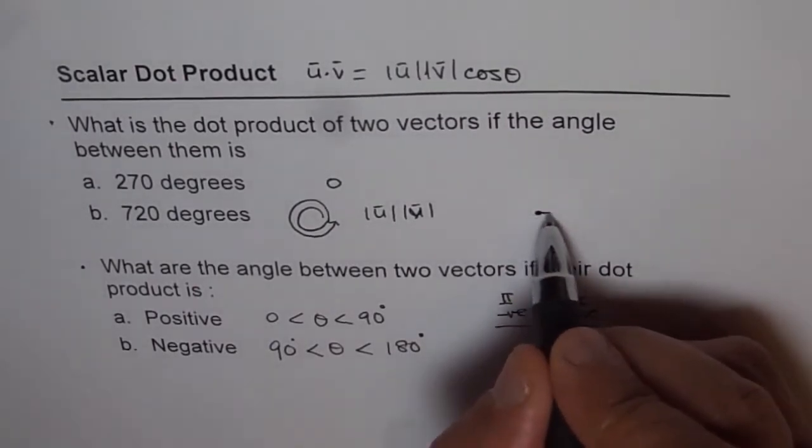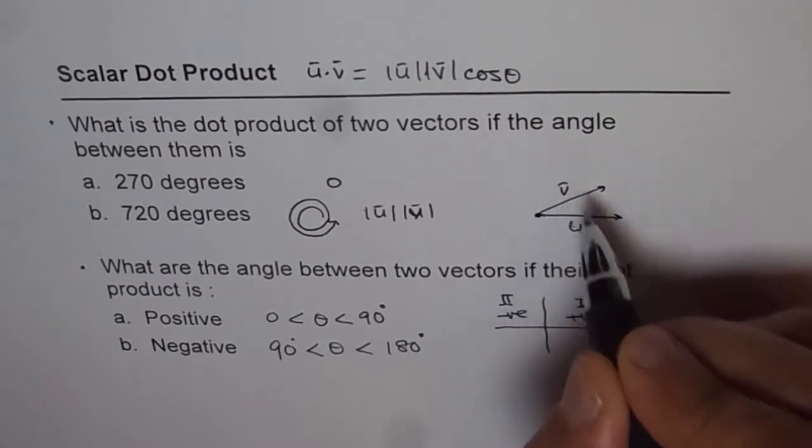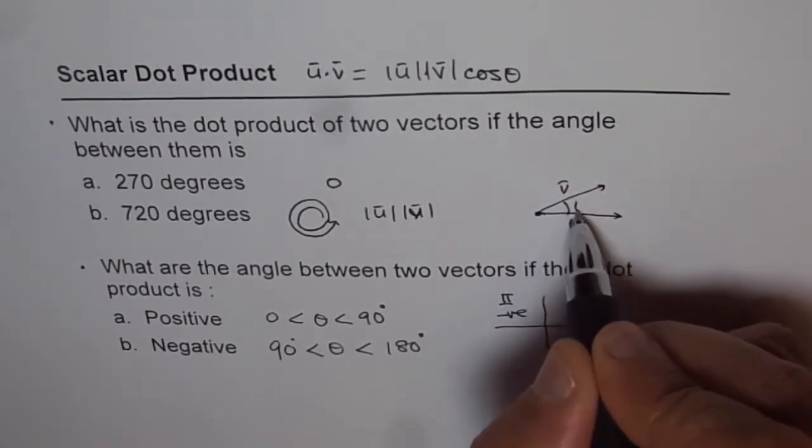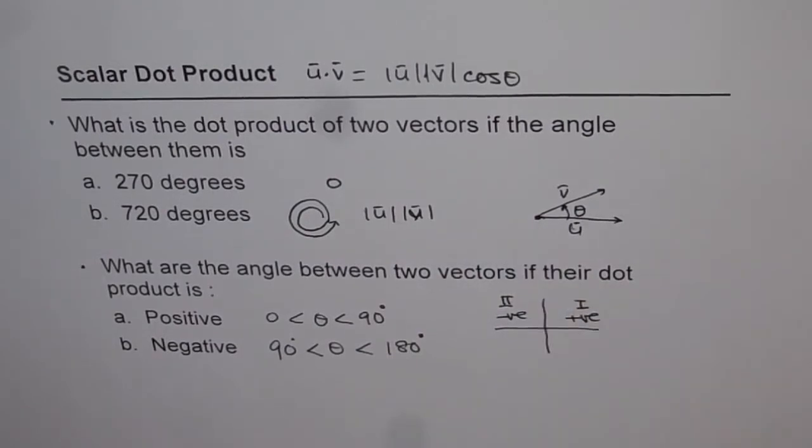So if the vector u is, for example, like this and vector v is here, in that case we are talking about θ, the angle between them when they are placed with their tails together. Thank you.